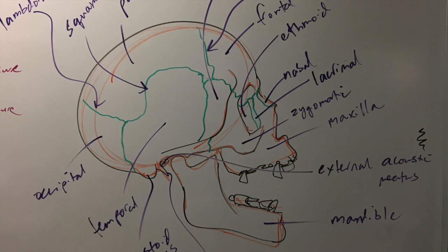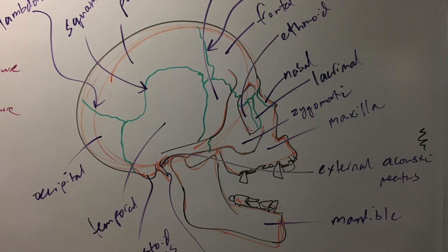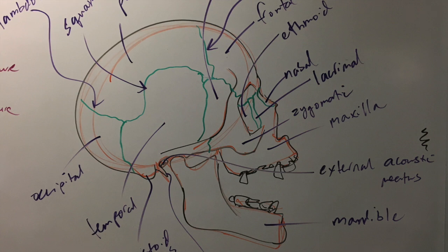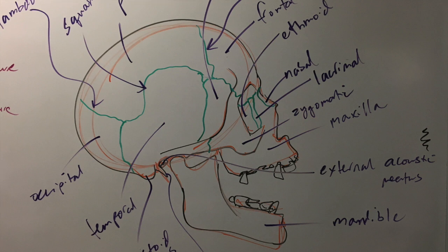A couple more little components: this little bump on the inferior side of the temporal bone is the mastoid process. The sharper little spike just anterior to it is your styloid process. Then there's a dark little hole right beside that styloid process — your external acoustic meatus — which is the hole in your temporal bone that is the pathway to your middle and inner ear.